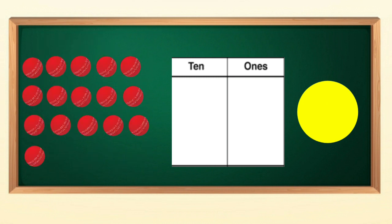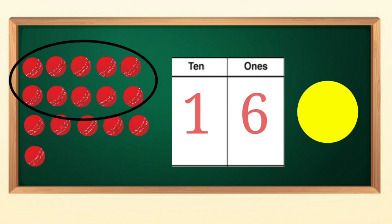Children, look, there are so many balls. Let's circle ten balls to make it into one ten. Now, we have one ten and six ones. It means sixteen.